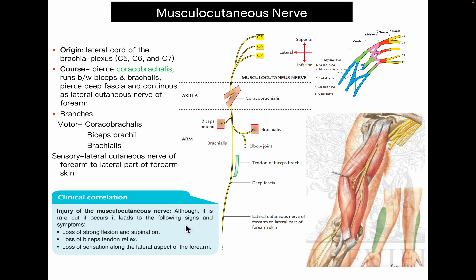Now for the clinical aspect: if the musculocutaneous nerve is damaged, there is loss of strong flexion and supination. This is because the biceps brachii muscle has two actions — supination and flexion — so if biceps brachii is paralyzed, there is loss of strong flexion and supination. The brachialis muscle is also paralyzed, and since its action is also flexion, this further contributes to loss of flexion.